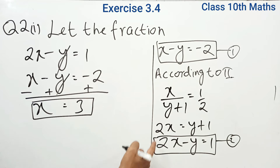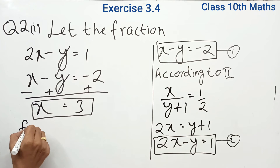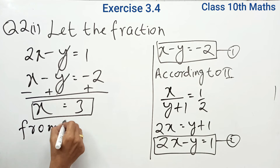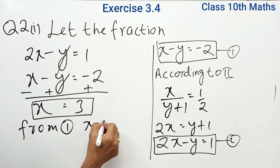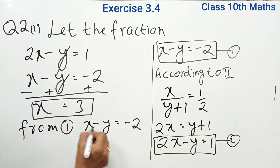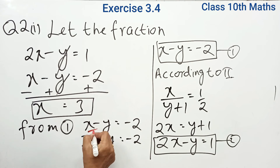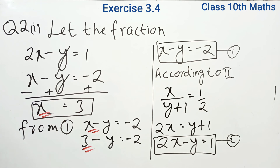To find y, we substitute x = 3 into the first equation. From equation 1: x minus y equals minus 2. Putting x = 3: 3 minus y equals minus 2. Solving this, y is equal to 5.